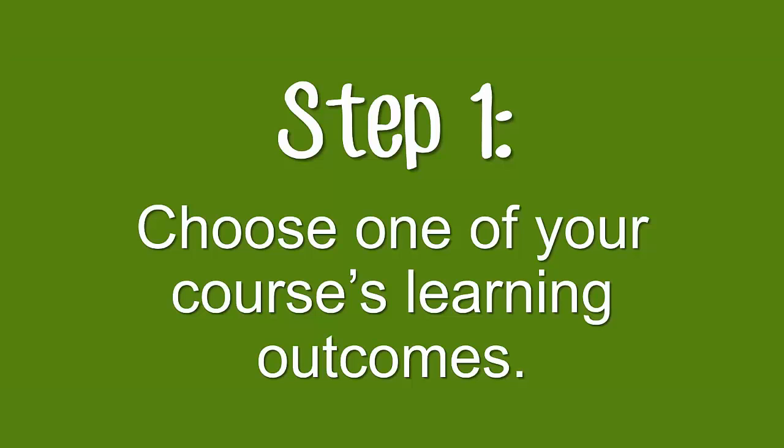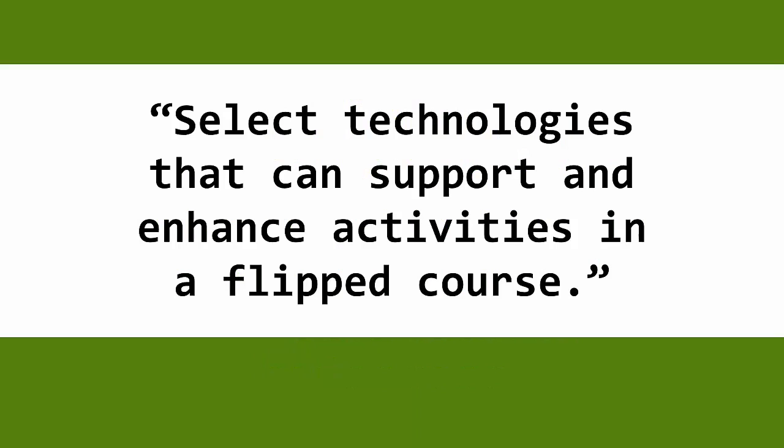Step 1: Choose one of your course's learning outcomes. In my case, I'm going to choose a learning outcome for my blended training course. This outcome is: select technologies that can support and enhance activities in a flipped course. Now that's not too broad, but it is not easy to measure as it currently is stated, so I do need to divvy it up a little bit.